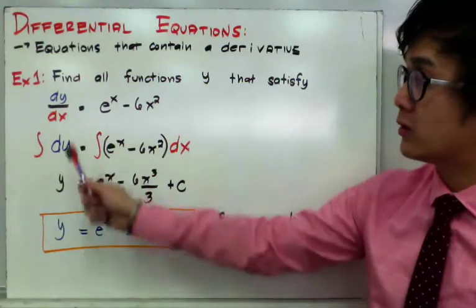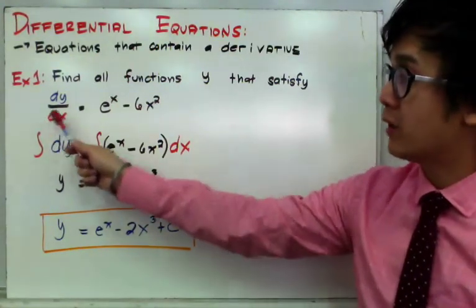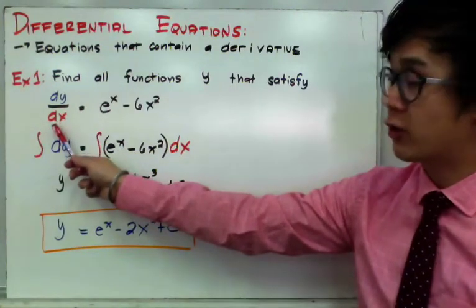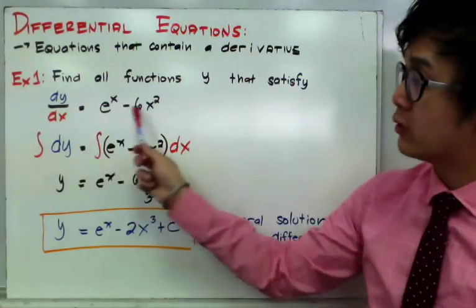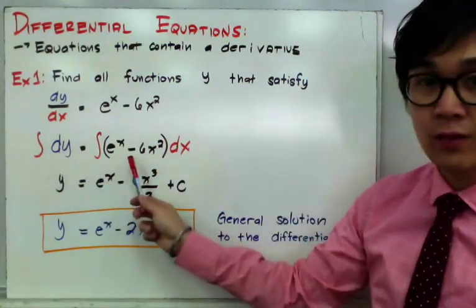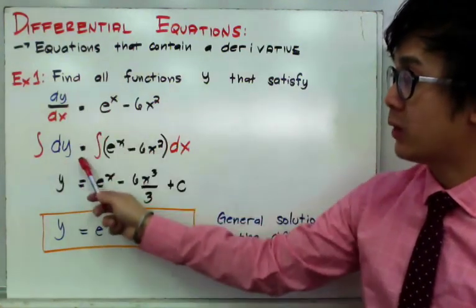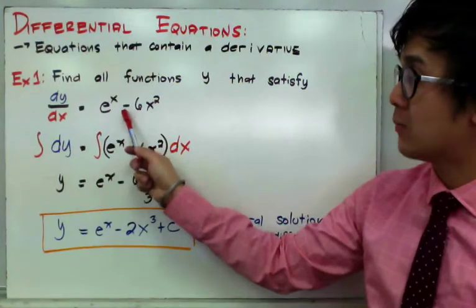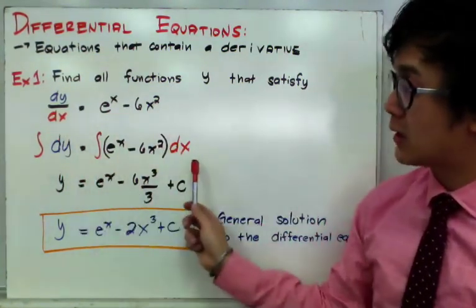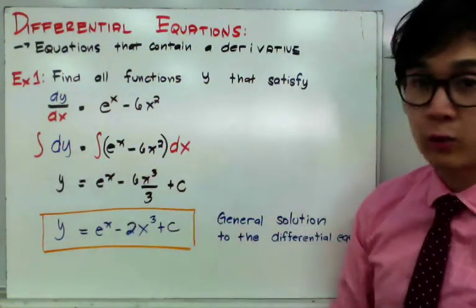The first step is to take notice of our dy/dx. To integrate both sides, we cross-multiply dx and move it to the other side of the equation, so we can integrate both the left and right sides. Now we have the integral of dy equal to the integral of e^x minus 6x squared dx, and we are ready to integrate.